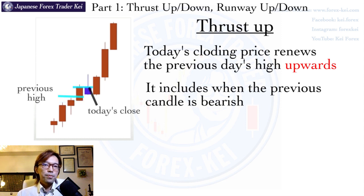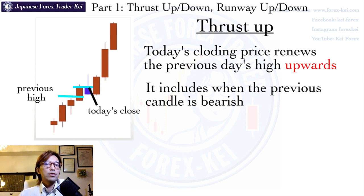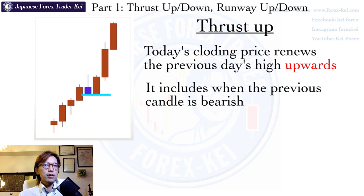This candle's closing price renewed the previous high here too — so this is also called Thrust Up. In this case, you can see the market has been thrust up 3 consecutive times. When you see a market like this, it tells you there is strong bullish momentum, expecting the bullish trend to persist. But what about this blue candle — is this a Thrust Up also? This closing price is here, the previous high is right here, and you can see that it didn't renew — so this is not called Thrust Up.